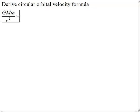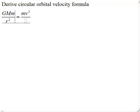This gravity causes a centripetal acceleration. Notice that our r's are going to cancel — this r will cancel with one of these r's — and the m's go away. We don't need to know the mass of the satellite.